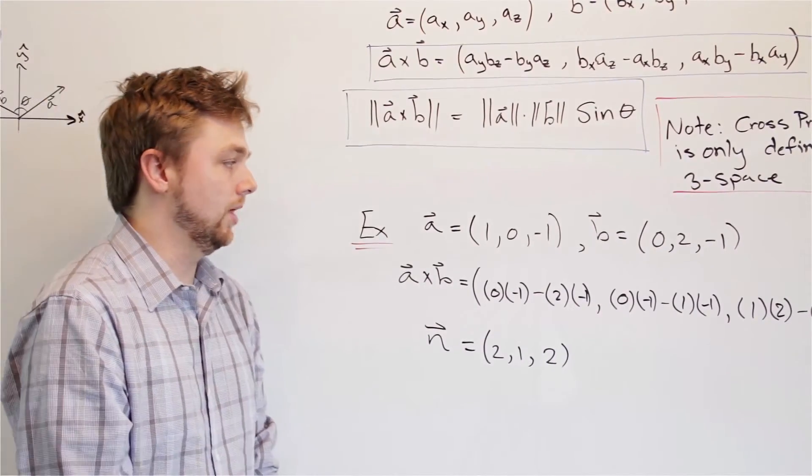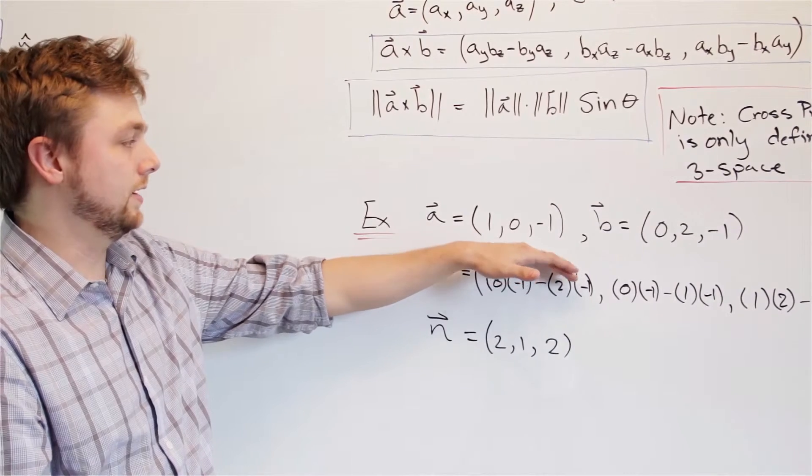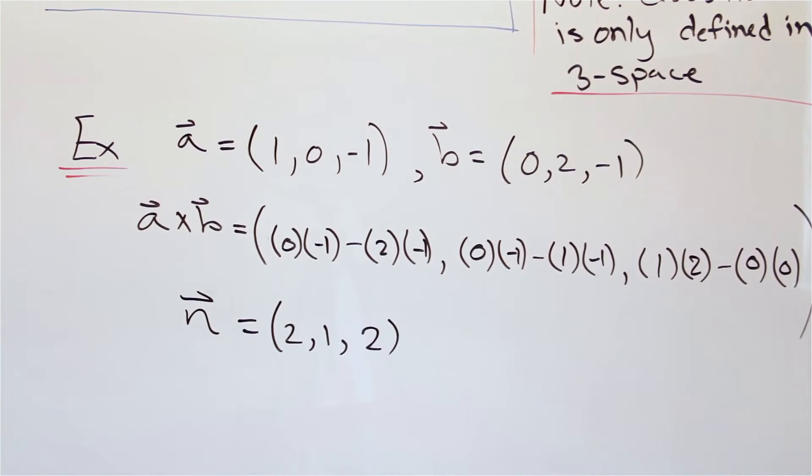Let's take a quick look at how we would apply this. So if we have two vectors here, a, which is (1, 0, -1), and b, which is (0, 2, -1). If we sub into this formula and reduce, we end up with a vector that looks like this, (2, 1, 2).